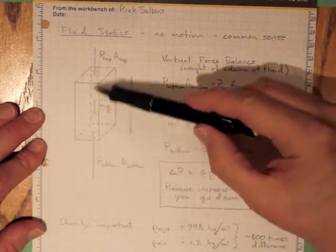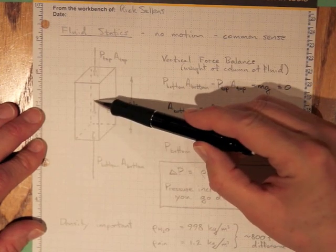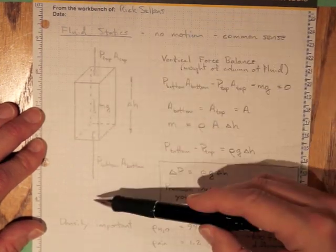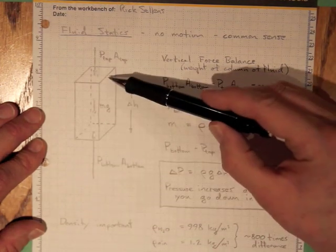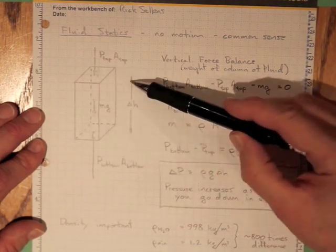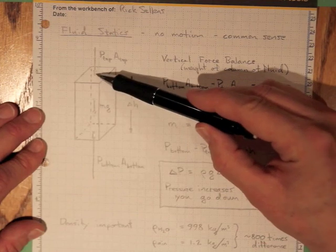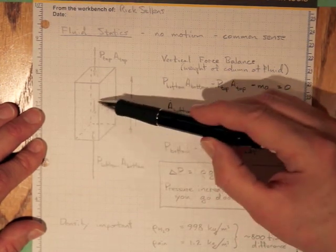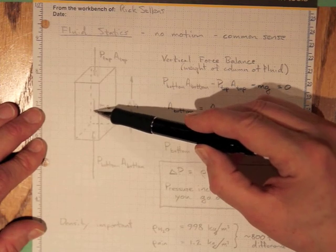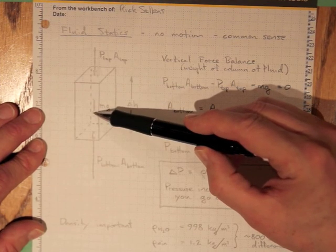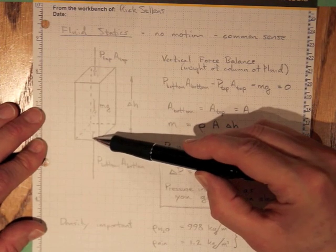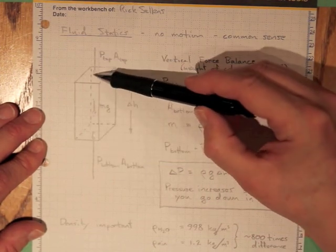If I've got a big chunk of fluid here that has some mass and it's subject to gravity in the downward direction and its height is delta H, the difference in height between the top face and the bottom face, then the gravitational force pulling it down will have to be balanced by the pressure force on the bottom being bigger than the pressure force on the top.